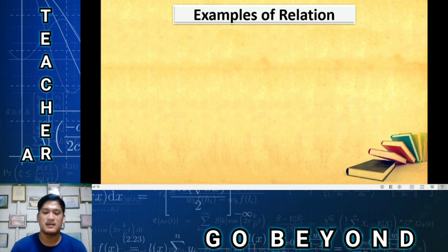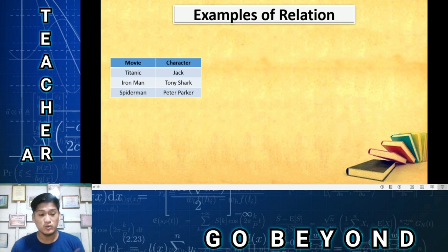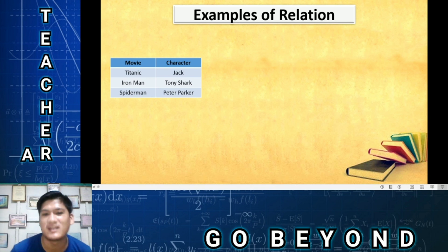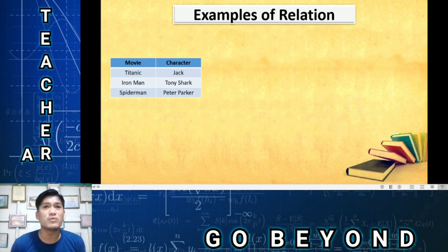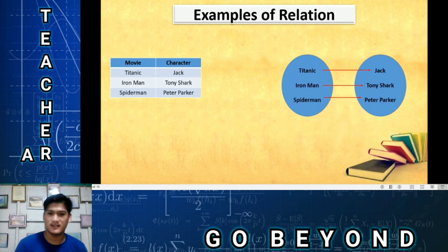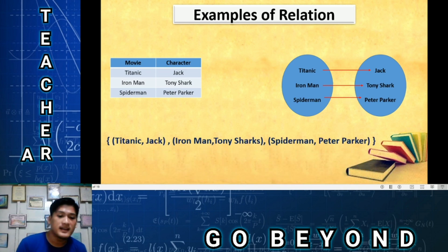Examples of a relation: movie and character. We have two elements — the movie (first variable) and the character (second variable). For example: Titanic and Jack, Iron Man and Tony Stark, Spider-Man and Peter Parker. These are the same data presented in different ways — they are the three ways of presenting relations.